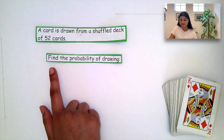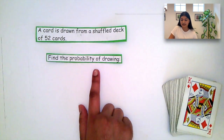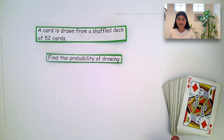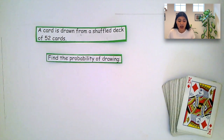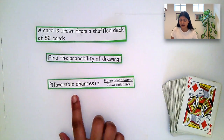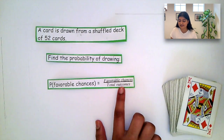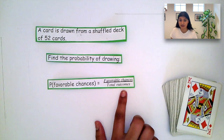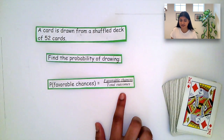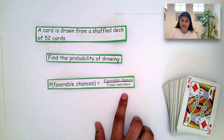A card is drawn from a shuffled deck of 52 cards. As you can see, this question is asking to find the probability of drawing certain cards. But before we get into solving this, we need to understand what probability is and how we can find it. We can calculate probability by the number of favorable chances over the total possible outcomes. And probability is written as a fraction, ratio, or a decimal.